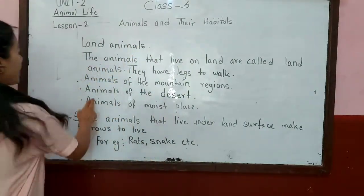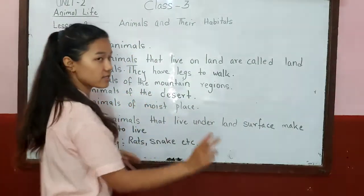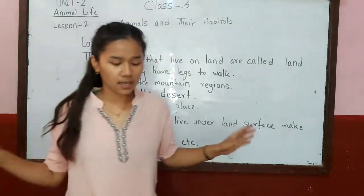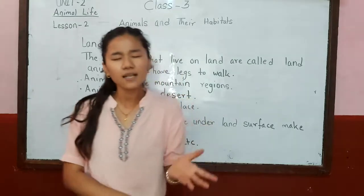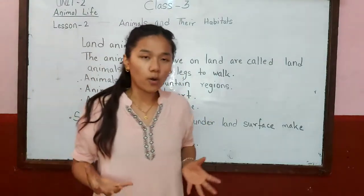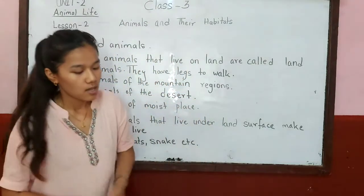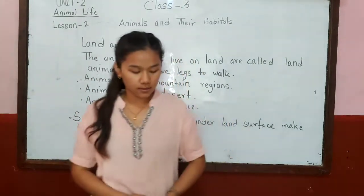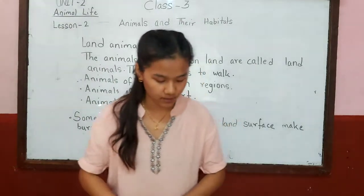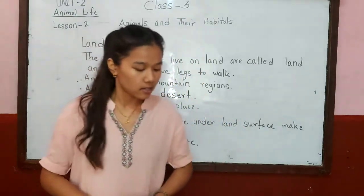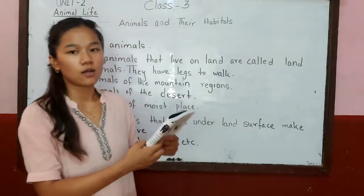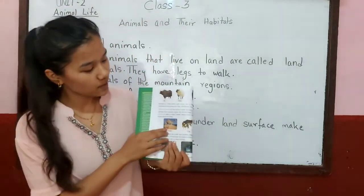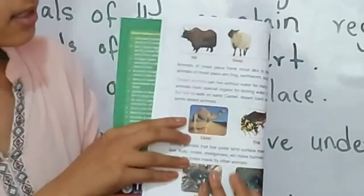Animals of the desert can live without water for many days. These animals have special organs for storing water. Camels have flat feet to walk on sand. You can see here camel as an example of a desert animal.